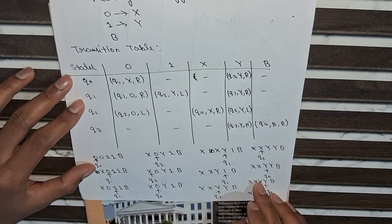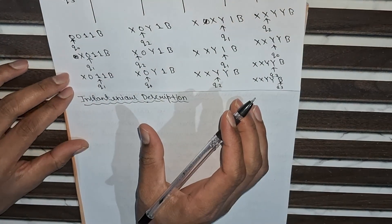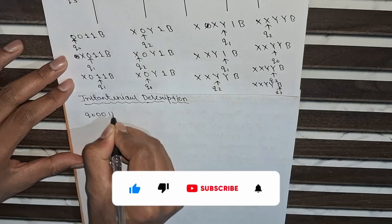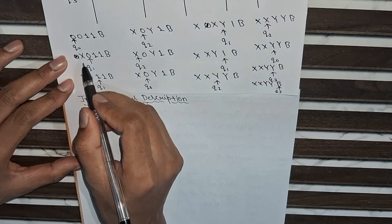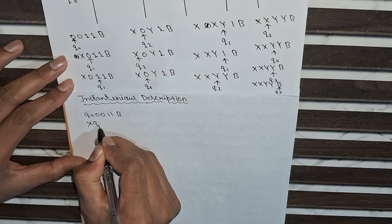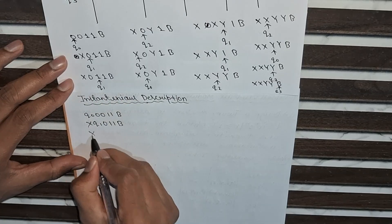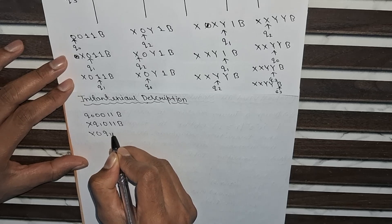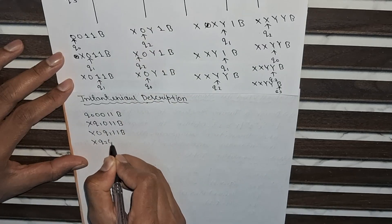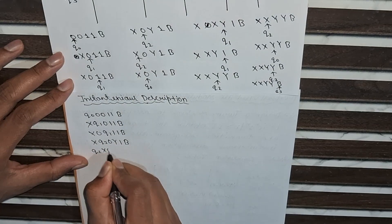Now with the help of these steps I will write the instantaneous description. We write: q0 0 0 1 1 B — read-write head on 0 with state q0. Next step: X q1 0 1 1 B — 0 is made X, move right with state q1. At q1 on 0: X 0 q1 1 1 B. Then X 0 q2 Y 1 B — making 1 as Y. Next: q2 X 0 Y 1 B.